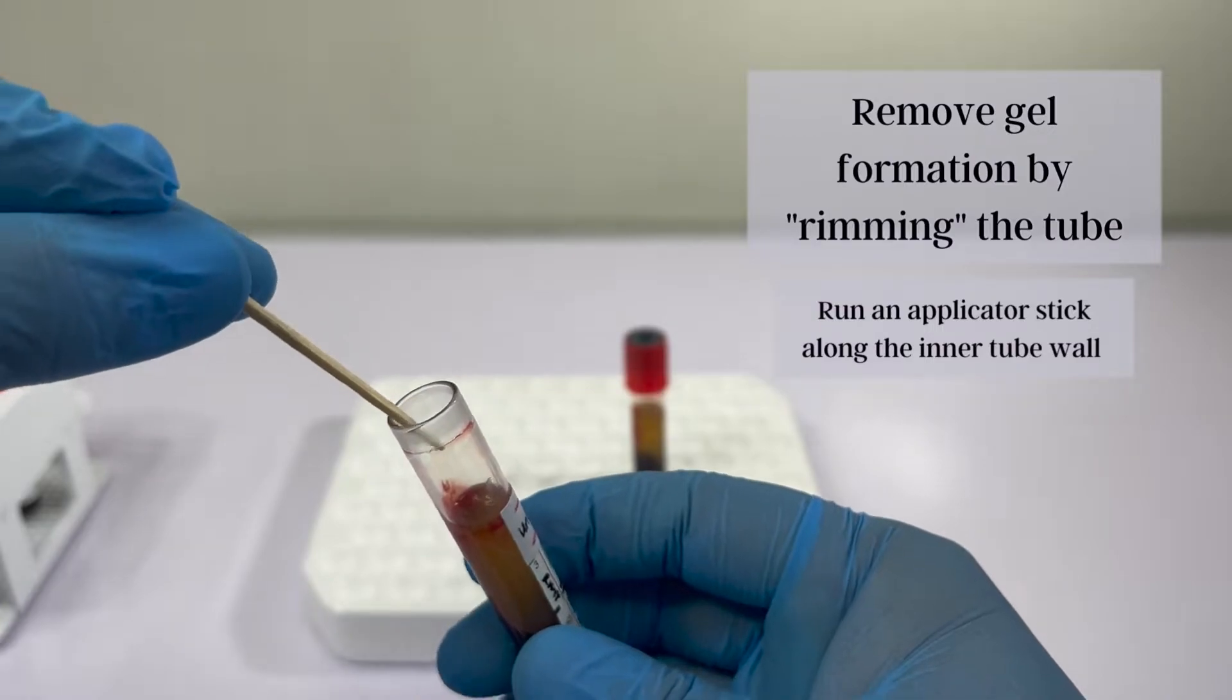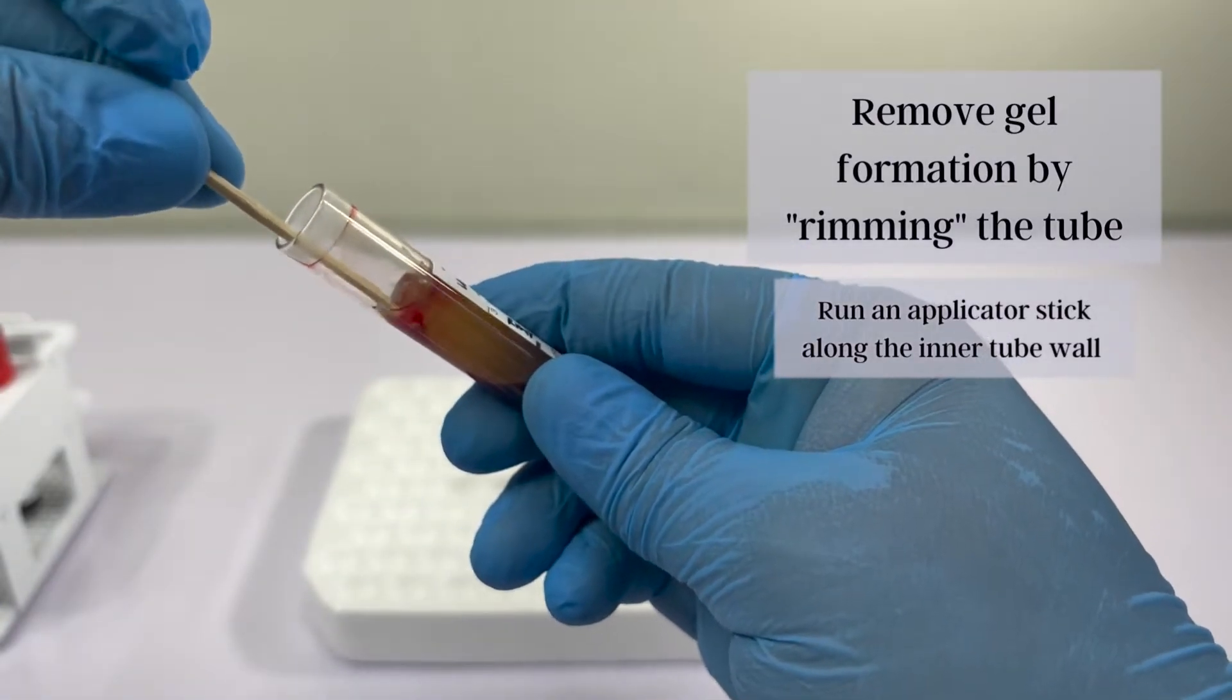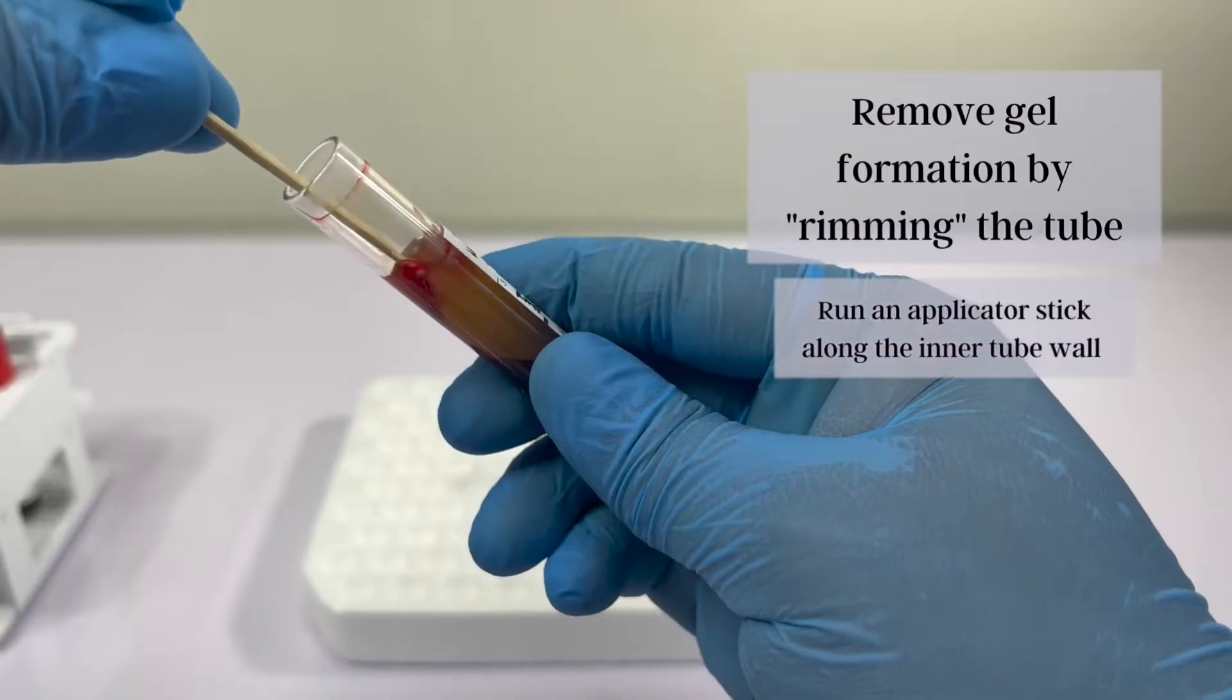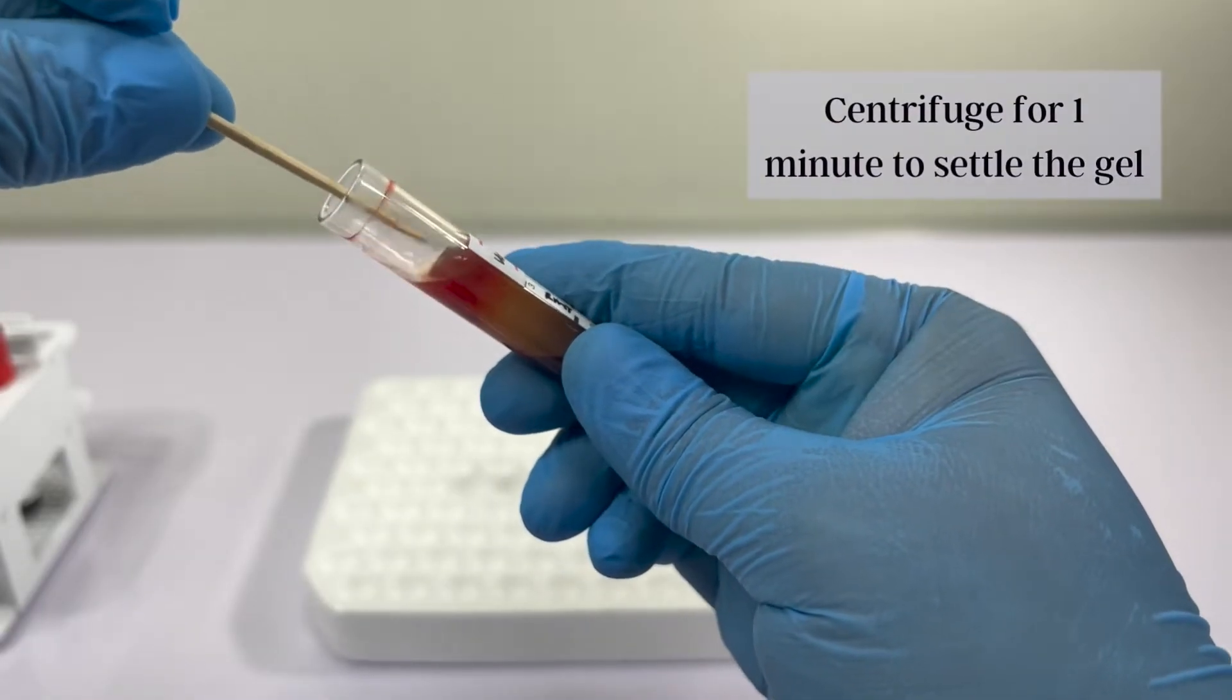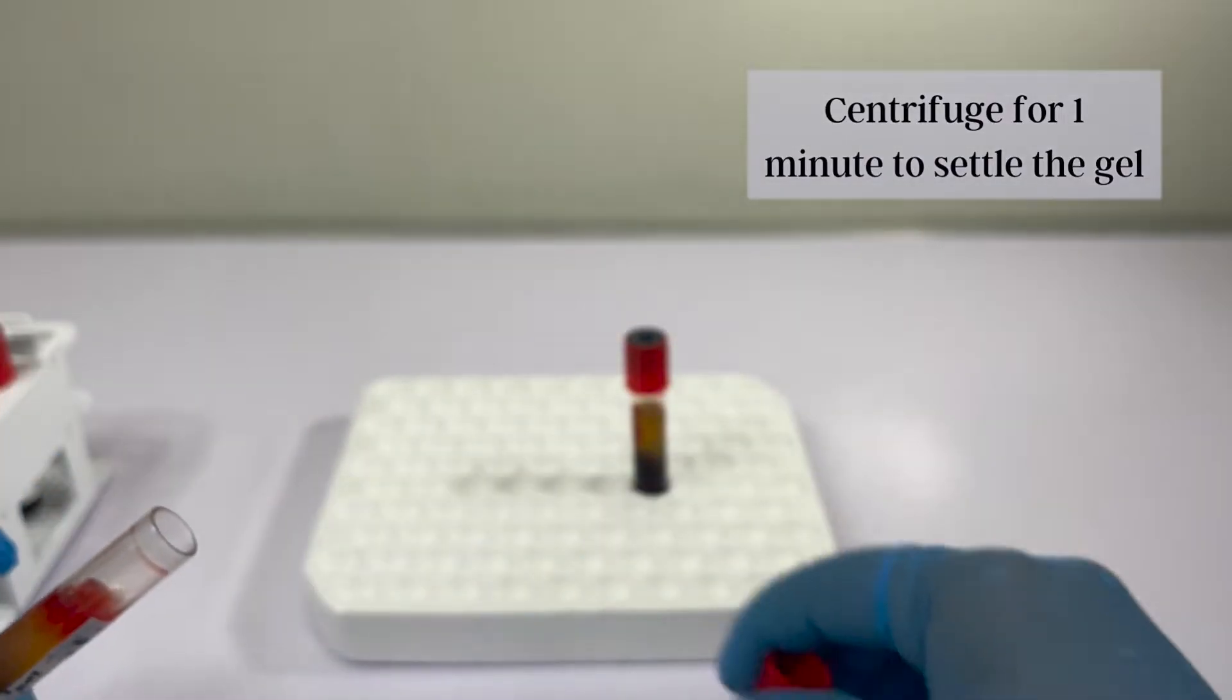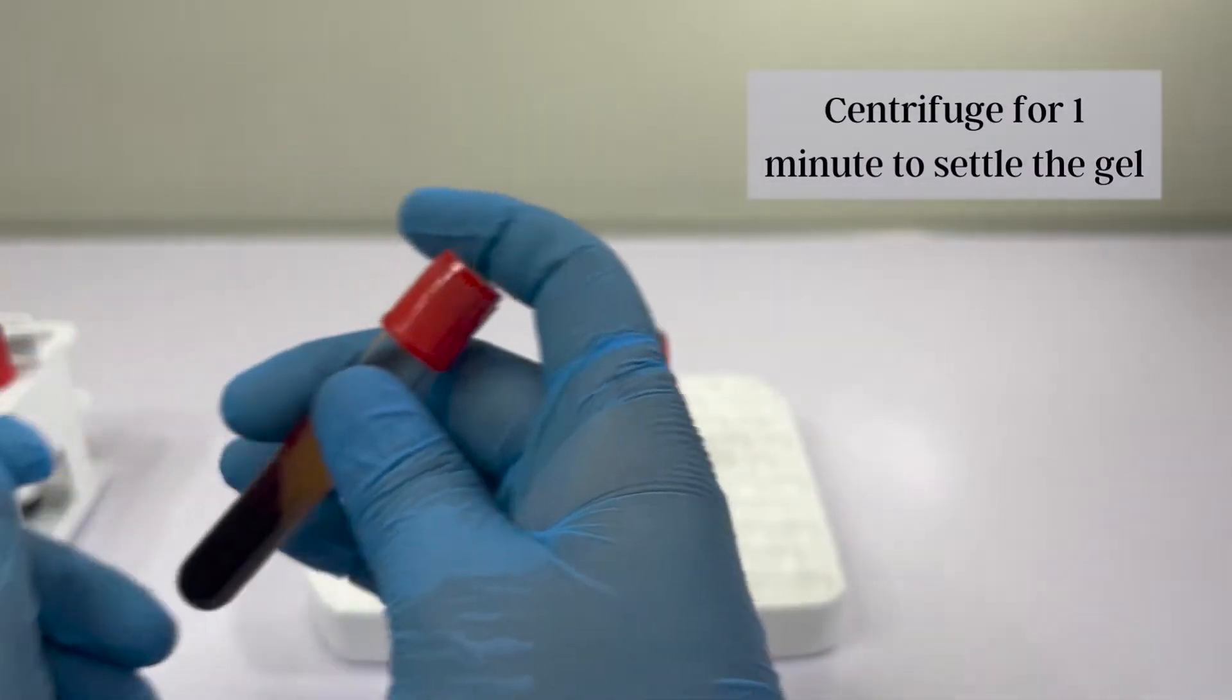To remove the gel, rim the tube by gently running a toothpick along the tube's inner walls. After, re-centrifuge the tube for 1-2 minutes.